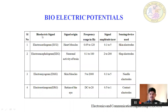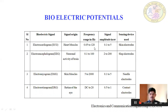This is a chart mentioning different bioelectric signals along with signal origin — where the signal is generated in the human body — the frequency of operation, its amplitude, and which device is used to sense the signal. The first one is electrocardiogram, in short ECG — it's very popular, many of us already know it. It is a signal from the heart muscles, ranging from 0.05 to 120 hertz with amplitude of 0.125 microvolts. Normally a skin electrode is used to record the ECG signal.